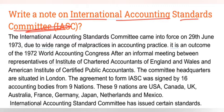The International Accounting Standards Committee came into force on 29 June 1973 due to a wide range of malpractices in the accounting field. It is the outcome of the 1972 World Accounting Congress after an informal meeting between representatives of the Institute of Chartered Accountants of England and Wales and the American Institute of Certified Public Accountants. The committee headquarters are situated in London.